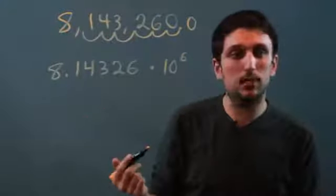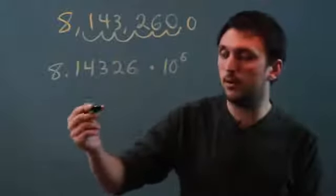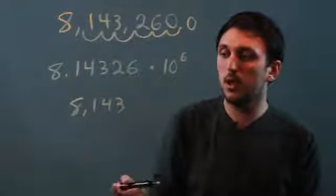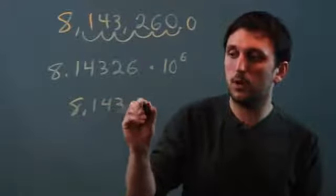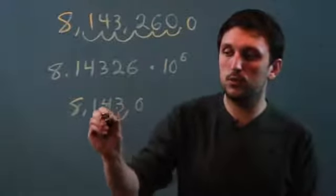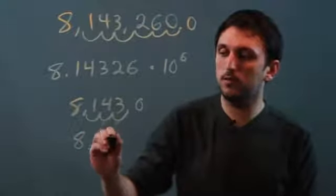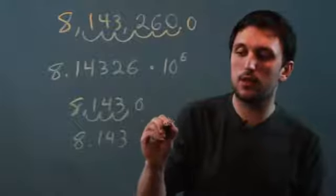We could take an easier number just to see how it's different. Let's say we just had the number 8,143. To put this number in standard form, we would need to move it over 1, 2, 3 places. So it's 8.143 times 10 to the third.